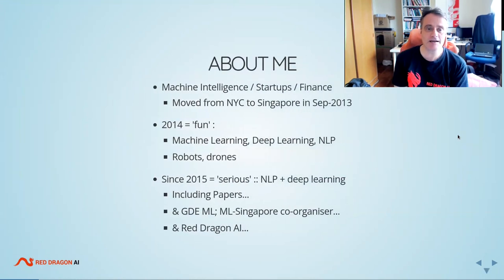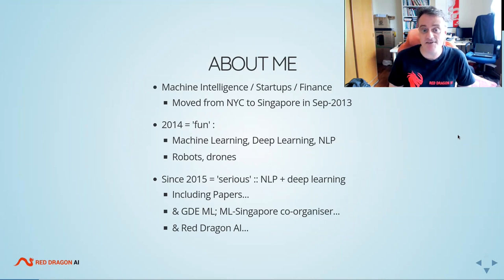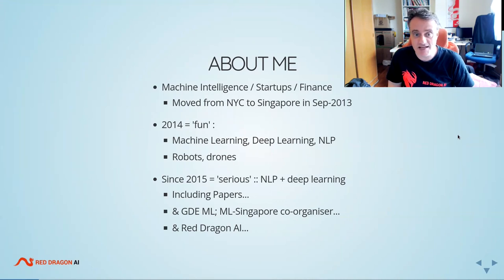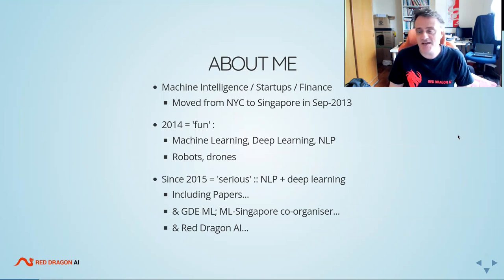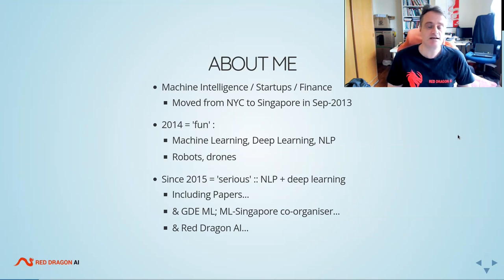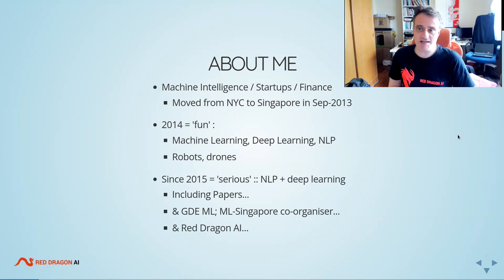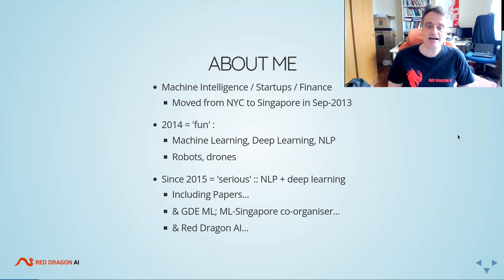A little bit about me: I have a background in machine intelligence, startups and finance, but I moved from New York to Singapore in September 2013. Since 2015 I've been in serious mode doing natural language processing and deep learning, writing papers which have got to decent conferences. I'm also a Google Developer Expert for machine learning and co-organiser of the Machine Learning Singapore meetup.